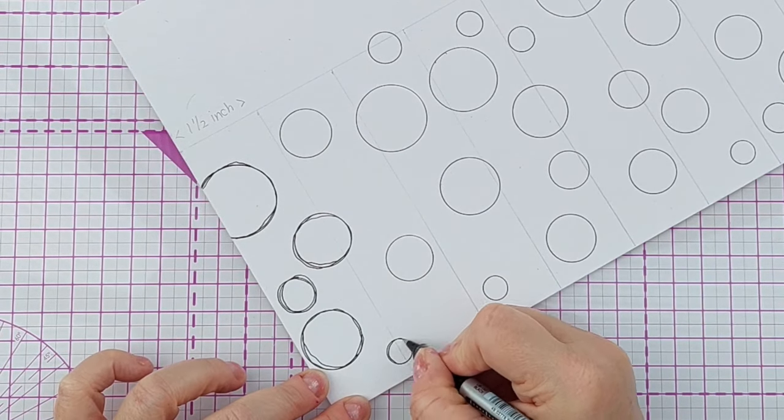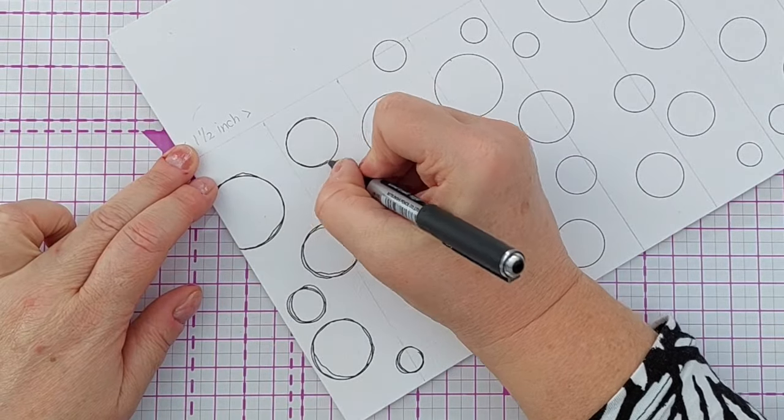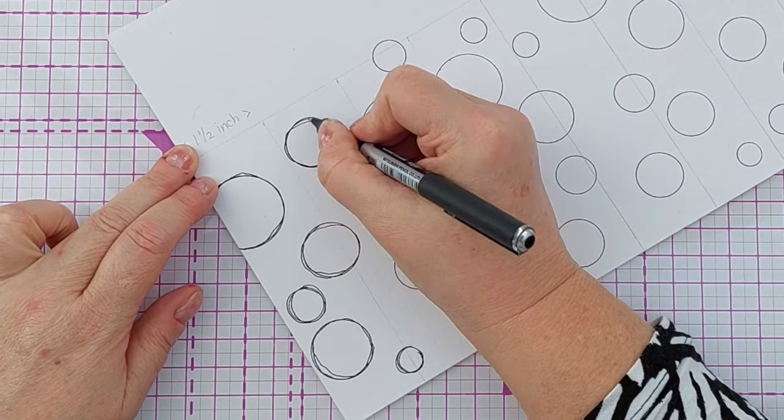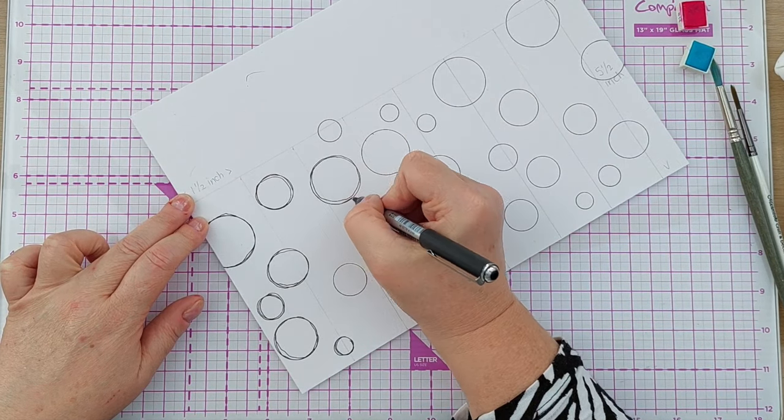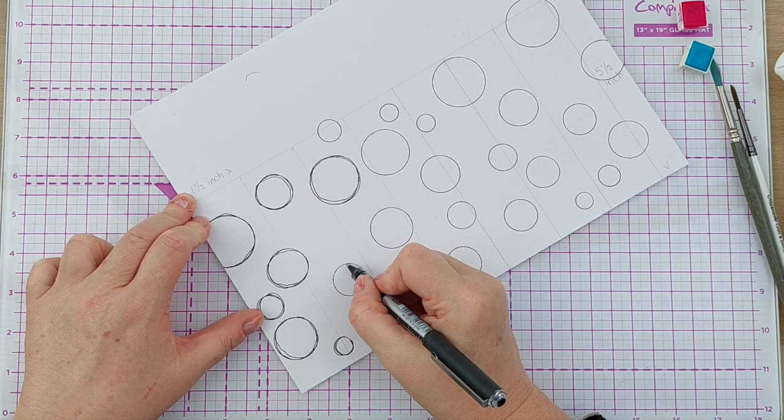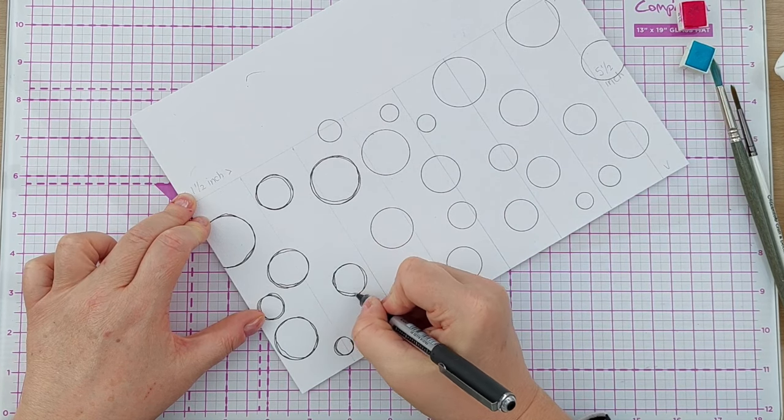But I want to make them look particularly wobbly and hand drawn. That's just the style that I'm going for with this card, or these cards rather, and go around them a couple of times to give them that wobbly look.